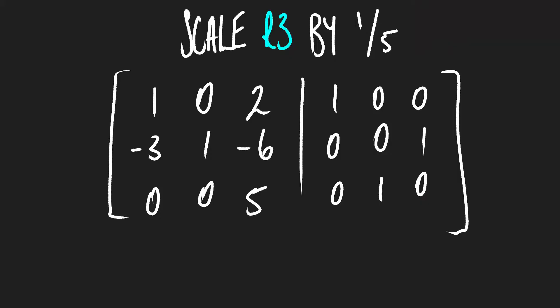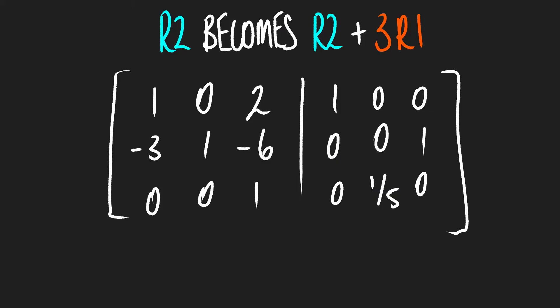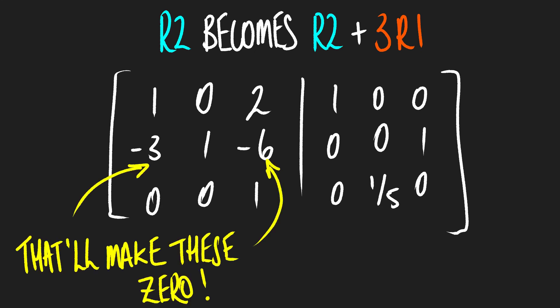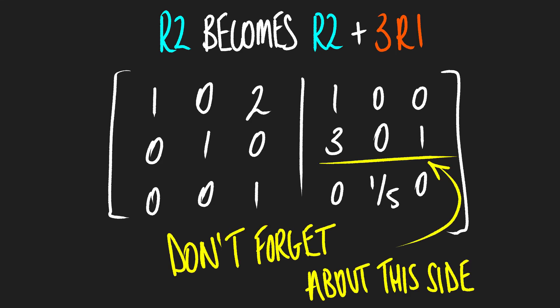Row three now has 0, 0, 5 in it. So if we divide row three by five, we get a leading diagonal of 1s in our original matrix — looking very good. Remember, we need to do exactly the same thing to the right-hand side, giving us 0, one-fifth, 0 there. Next, we replace row two with row two plus three times row one. The current row two — minus 3, 1, minus 6 — we cancel out the minus 3 and minus 6, leaving us with 0, 1, 0 in the second row, and 3, 0, 1 on the right-hand side.